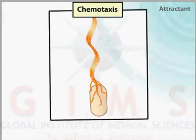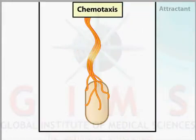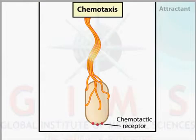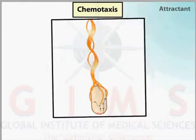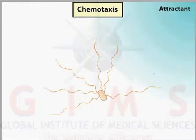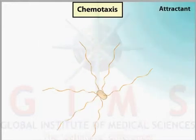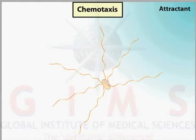In E. coli, the flagella bundle together behind one pole of the cell, while the opposite pole contains a diversity of chemotactic receptors. When the cell moves away from an attractant — i.e., down the concentration gradient of the attractant — the receptor sends signals that trigger one or more flagella to rotate clockwise. The bundle flies apart, causing the cell to tumble and then swim in a new random direction.